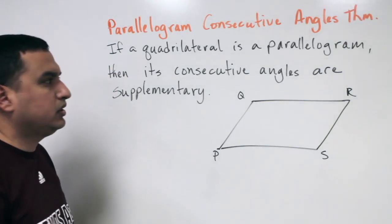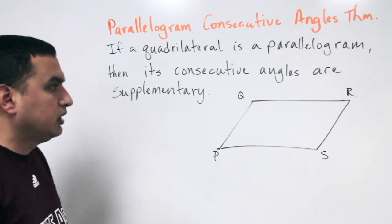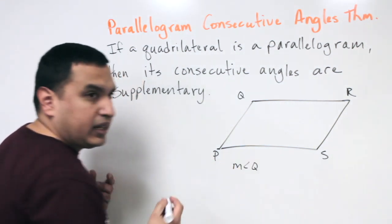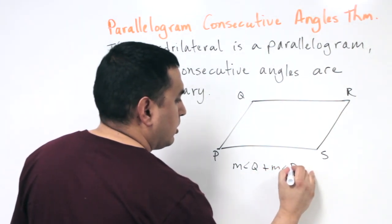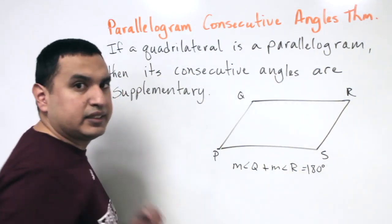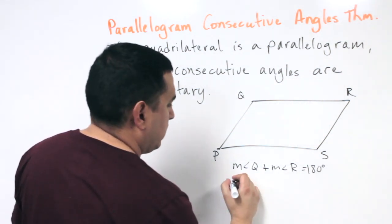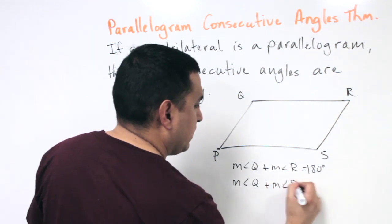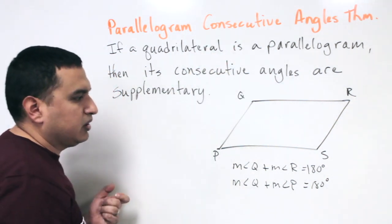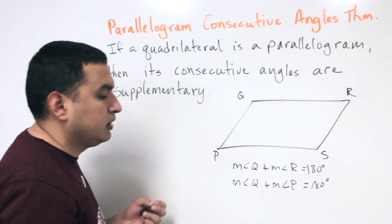The next theorem is the consecutive angles theorem. It says if a quadrilateral is a parallelogram, then its consecutive angles are supplementary. So the measure of angle Q plus the measure of angle R equals 180 degrees. Similarly, angle Q plus angle P would be 180 degrees, since those two are on the same side of the parallelogram. And likewise, angles P and S are supplementary, and angles S and R are supplementary as well.